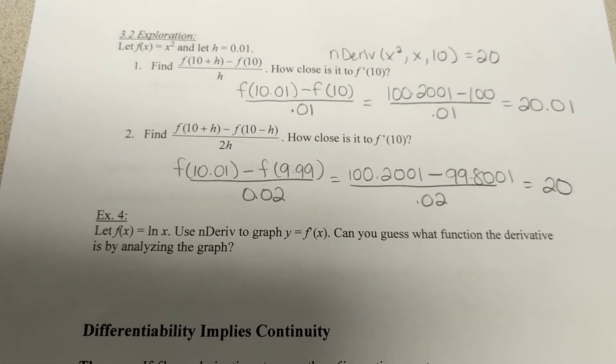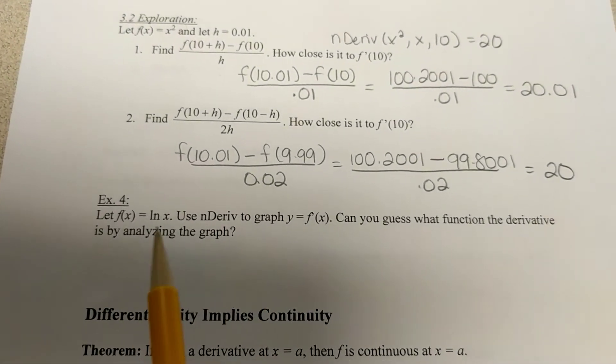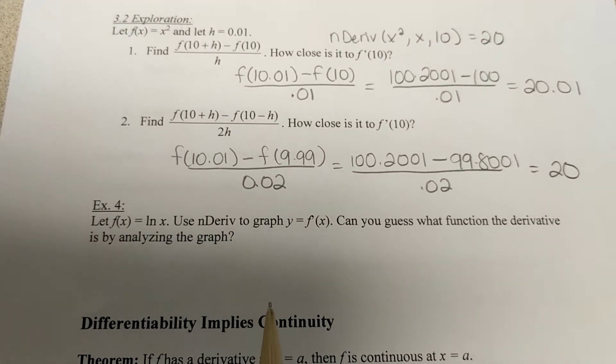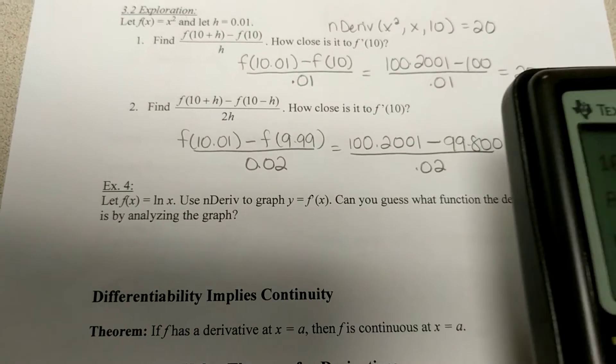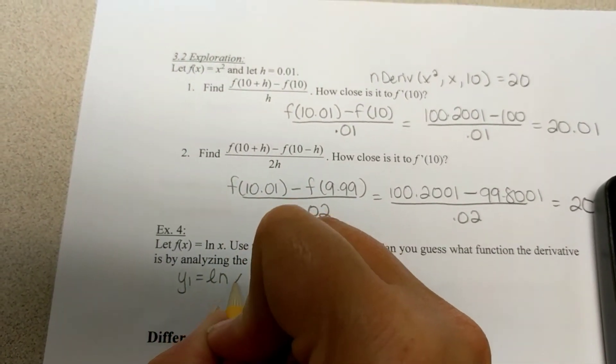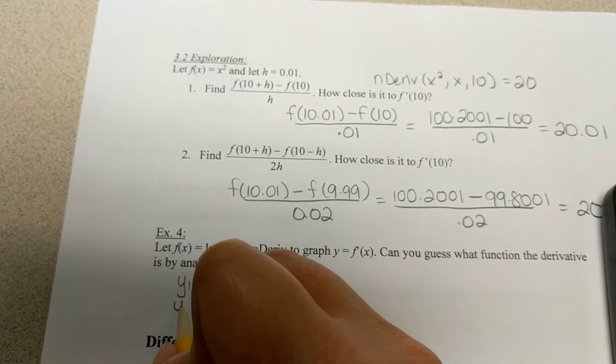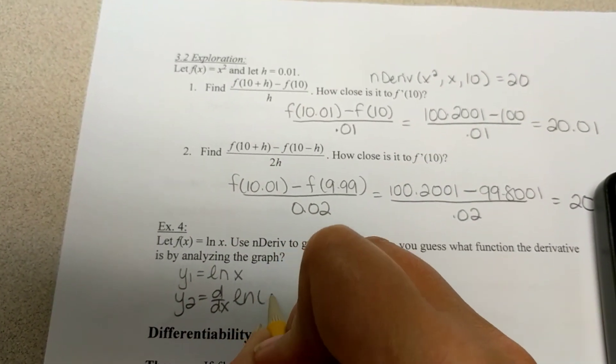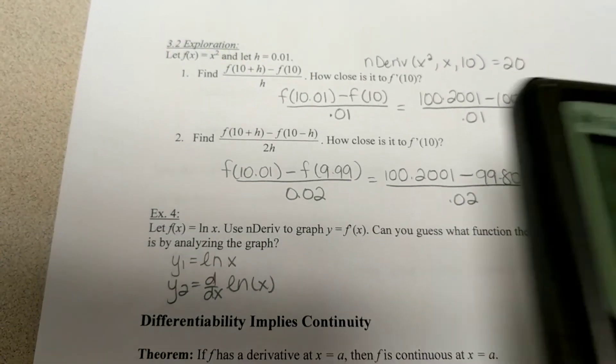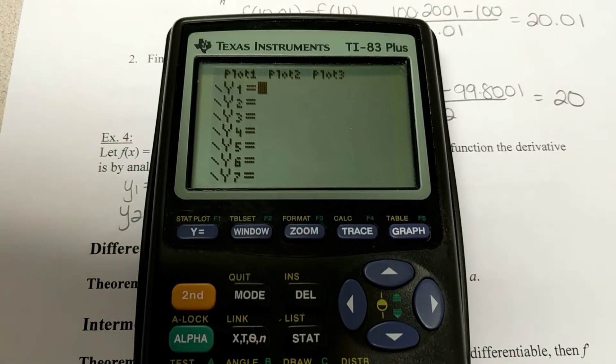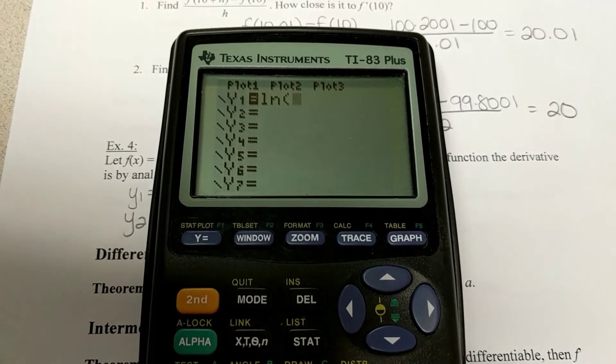Now, last but not least, example four says let f(x) be natural log of x. And we're going to let our calculator graph the derivative for us. Here's how this works. In y1, I want you to graph natural log of x. And then in y2, we're going to graph the derivative of natural log of x.